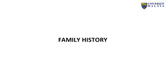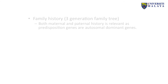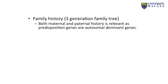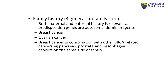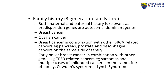Family history. We need to explore the family history of three generations, as both maternal and paternal history is relevant because predisposition genes are autosomal dominant. We need to know the family history of breast cancer and ovarian cancer, and whether breast cancer occurs in combination with other BRCA-related cancers such as pancreas, prostate, and esophageal cancers on the same side of the family. We also ask about early onset breast cancer in combination with TP53-related cancers such as sarcomas, multiple childhood cancers, Cowden syndrome, and Lynch syndrome.